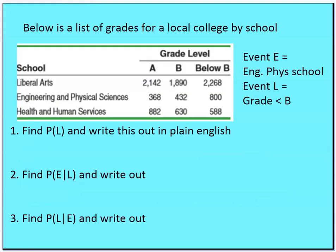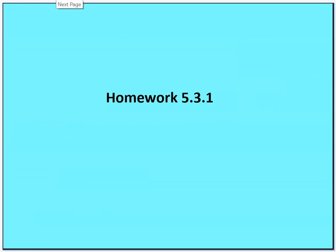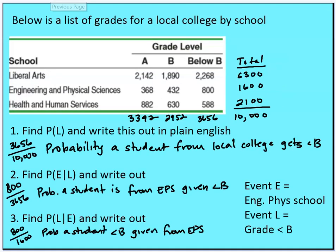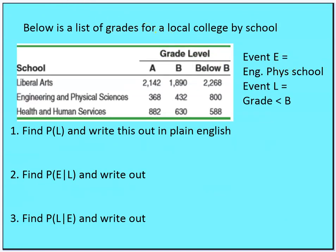This brings us to homework problem 5.3.1: below is a list of grades for a local college by school — liberal arts, engineering, physical sciences, health and human services — where event E is engineering and physical sciences, and event L is a grade below a B. Find the probability that a student is in the engineering and physical sciences school, find P(E|L) and P(L|E), and write out these probabilities in plain English.